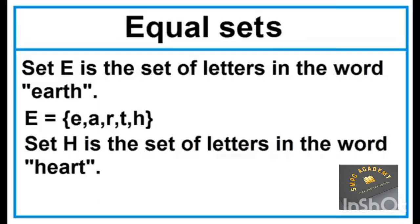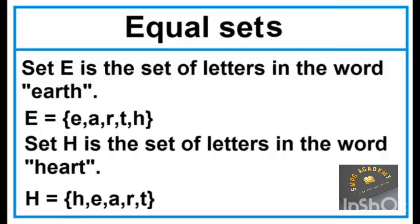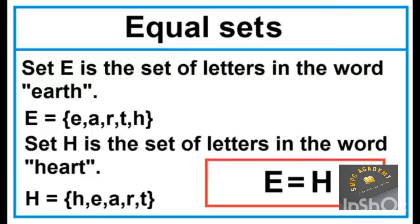Set H is the set of letters in the word 'Heart'. The elements of Set H are H, E, A, R, T. Set E and Set H have the same elements, so they are equal sets. Set E equals Set H.